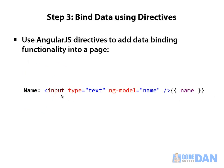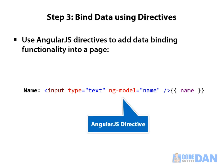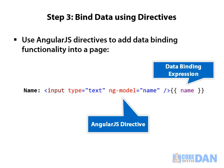Here's an example with an input — we're going to allow the user to type in their name, and as they type we capture what they typed in a special behind-the-scenes property in a model object, which is just an object that holds data. We'll call that property 'name'. The ng-model is a directive. We then capture the value using the data binding expression: double squiggly brackets with the name of the property. So whatever they type will be written out right next to the input.